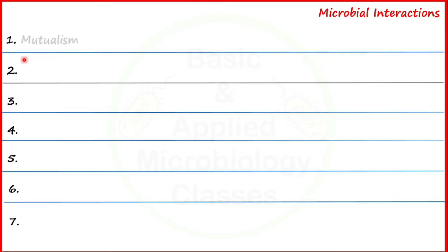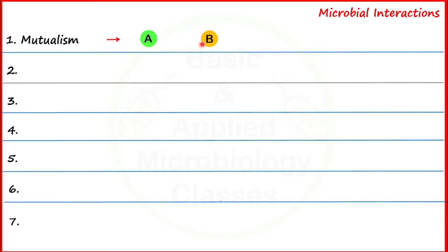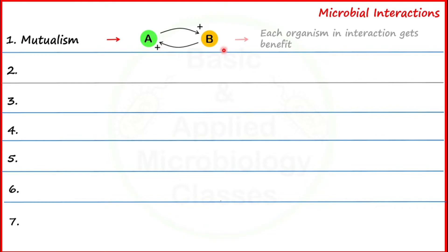The first interaction is mutualism. Let's understand it with the help of a schematic diagram. We are studying two different microbial populations labeled A and B living in an environment and interacting with each other. A gives some kind of benefit to B, and B also gives some kind of benefit to A — each organism gets benefit from this association. When both partners benefit, we call this interaction mutualism.